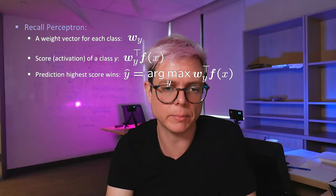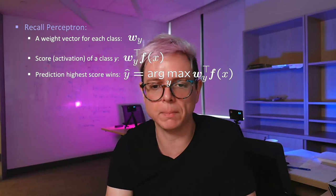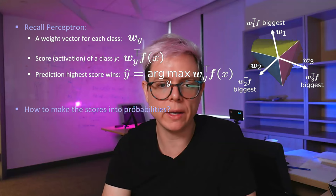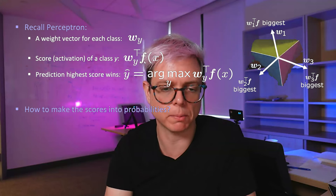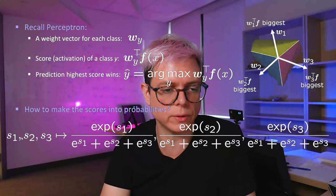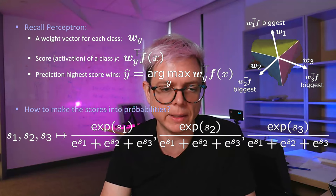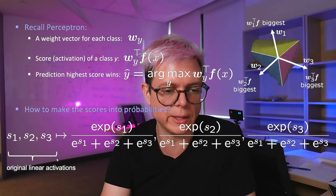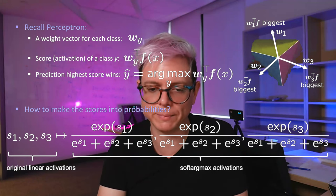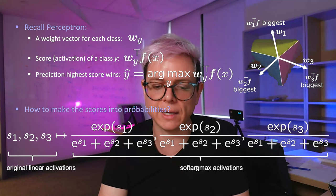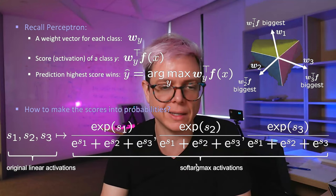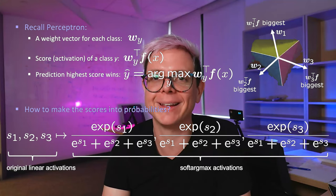We saw the multi-class case with one weight per class, multiple inner products, and the prediction as the argmax. To convert inner product scores into probabilities, we use this formulation: take the exponential of each score and divide by the sum, so if you sum the three, you get one. Each is positive. These are the original linear activations; the right-hand side I call soft argmax activations. People outside this class will mistakenly use different terminology. Why this is important, I'll tell you in the next lesson.